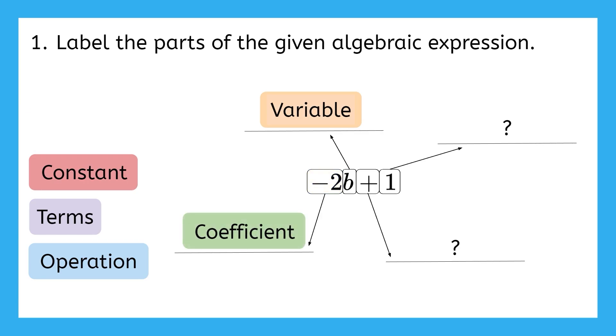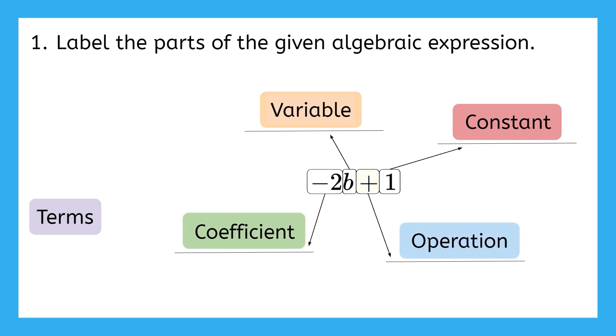How about this 1 over here? It's a number on its own with no variable. What word describes this number? Yep, constant. 1 is called a constant in this algebraic expression. In negative 2b plus 1, what word would describe the plus here? Operation, exactly right.